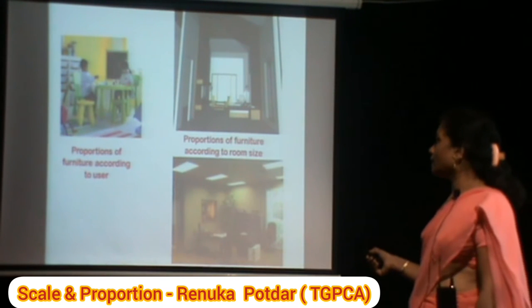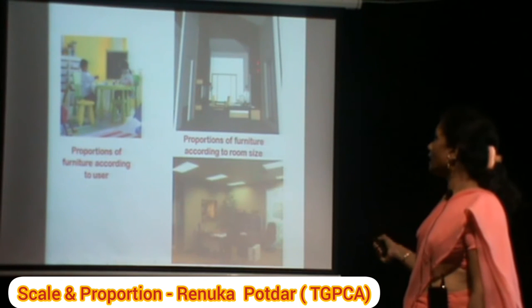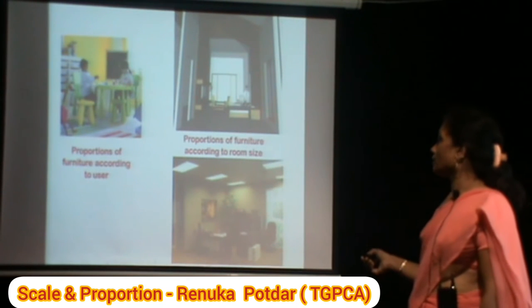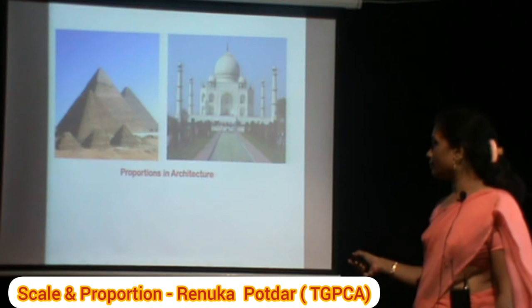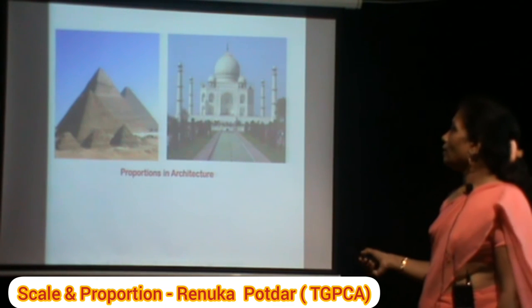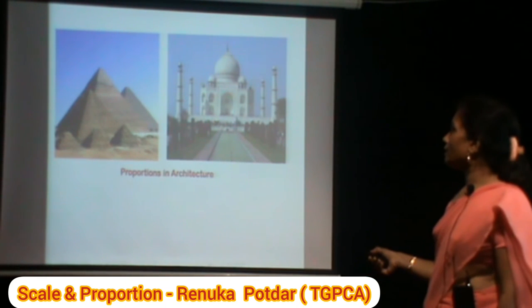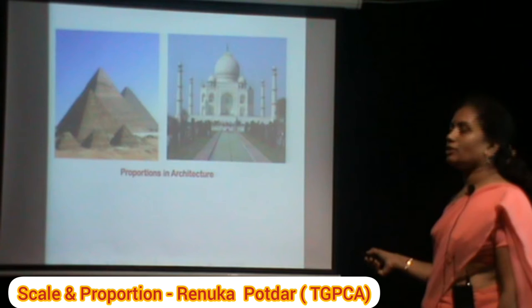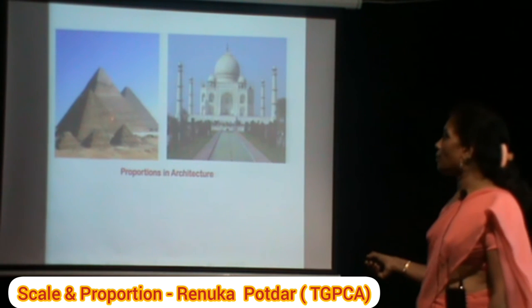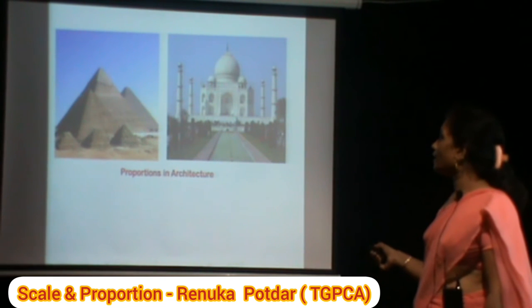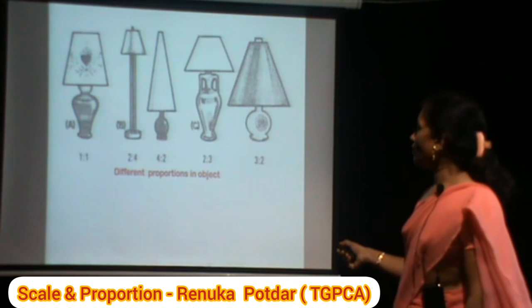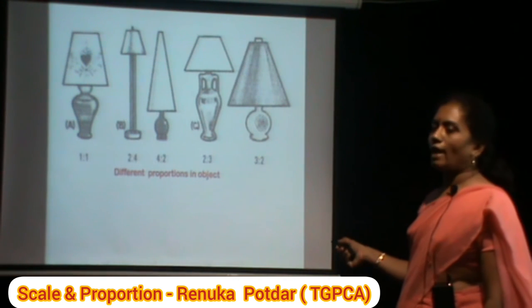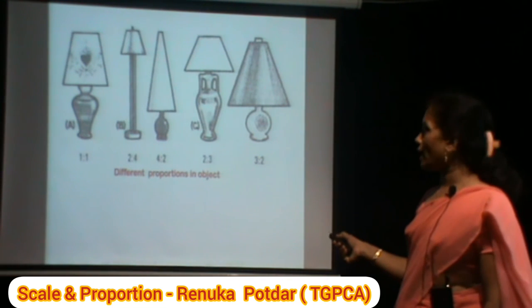Proportions of furniture are also considered in relation to the size of the enclosure. There are certain proportions in architecture as well — proportional building design, granite of design, placement, different proportionate objects, lamp poles, and lamps.